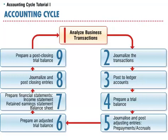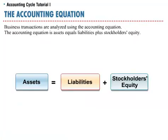The first step in the accounting cycle is to analyze business transactions. Business transactions are analyzed using the accounting equation. The accounting equation is: assets equals liabilities plus stockholders' equity.